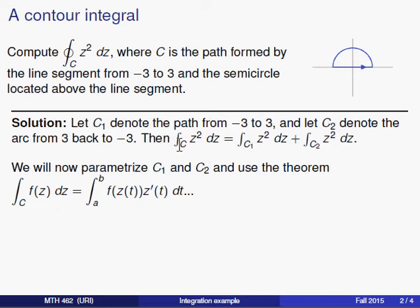We know that the integral of z squared along the entire contour will just be the sum of the integrals along these two partial contours. For each of these individual integrals, we're going to do that trick we talked about in the last video. We're going to come up with a parameterization, and we're going to plug that parameterization in for z, and then replace dz by z prime of t dt.